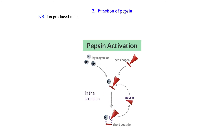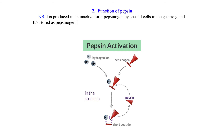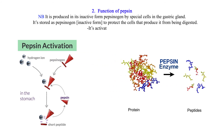2. Function of pepsin. NB: It is produced in its inactive form pepsinogen by special cells in the gastric gland. It is stored as pepsinogen, its inactive form, to protect the cells that produce it from being digested. It is activated to pepsin by HCl. Its function is the breaking down of proteins to peptides.